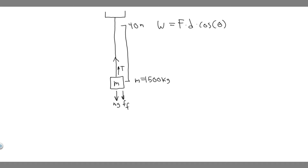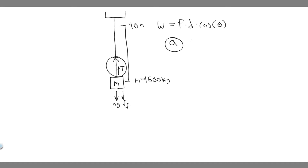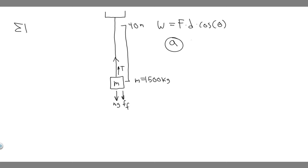Let's start with the first one. We're going to be solving for the work done by the cable — essentially the work done by the tension force, because this is the force done by the cable. To find it, we need to find the tension force by taking the sum of the forces in the y direction. We know the elevator is traveling at a constant speed.